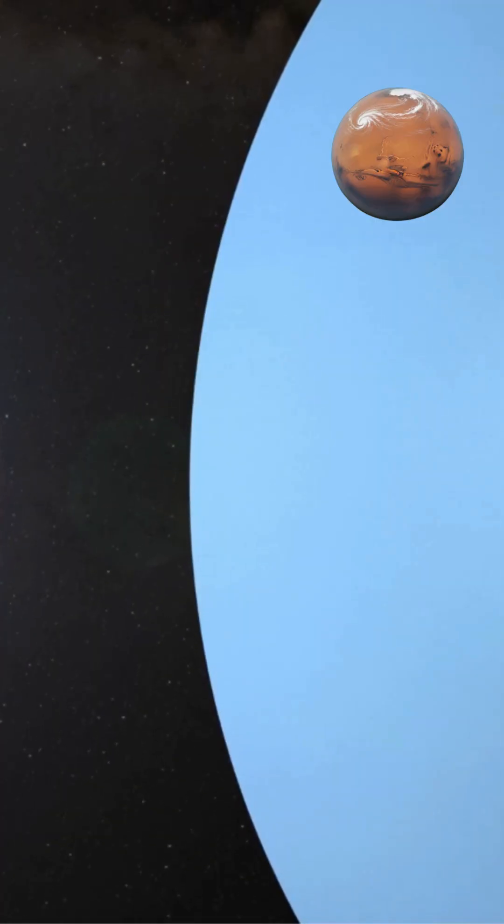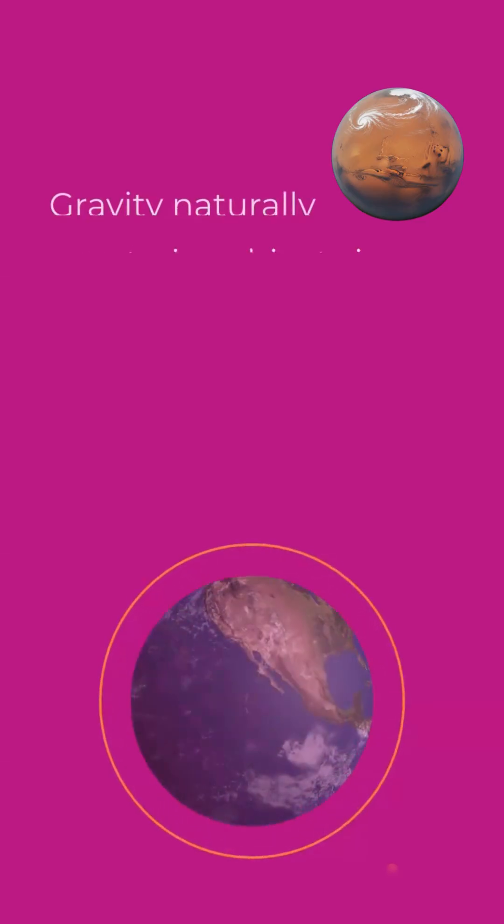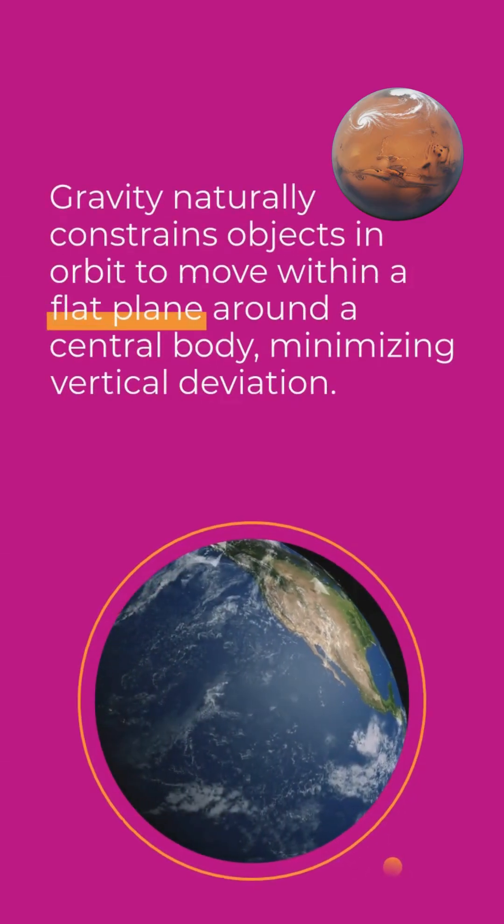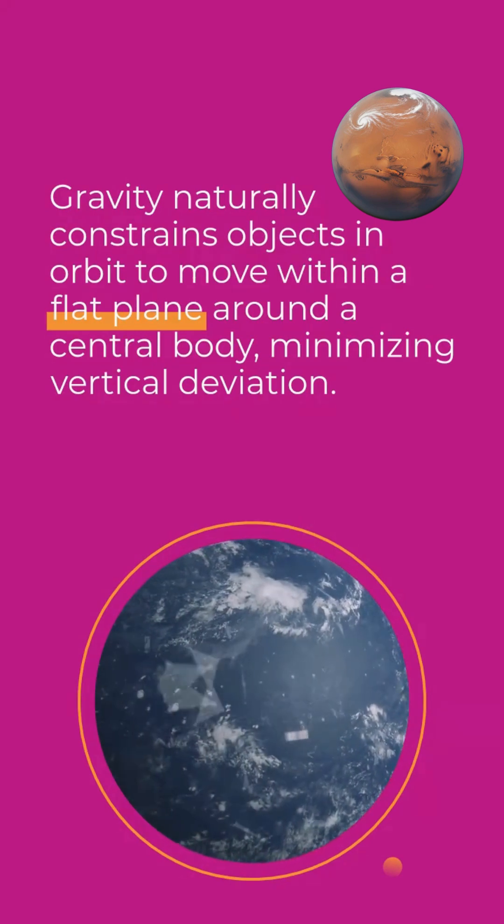These particles follow stable orbital paths in a single plane, similar to how planets orbit the sun. Gravity naturally constrains objects in orbit to move within a flat plane around a central body, minimizing vertical deviation.